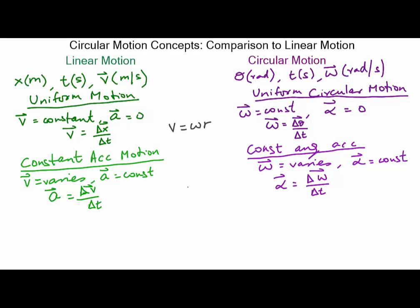These analogies continue: tangential acceleration is related to angular acceleration the same way linear velocity is related to angular velocity. Tangential acceleration is the acceleration along the direction of motion for an object in circular motion. Going back to uniform circular motion, there is also a radial or centripetal acceleration even when speed isn't changing, because direction is changing. That radial acceleration is given by v squared over r, or omega squared times r. The tangential acceleration for uniform circular motion is zero, since the speed along the direction of motion is not changing — only the direction changes.